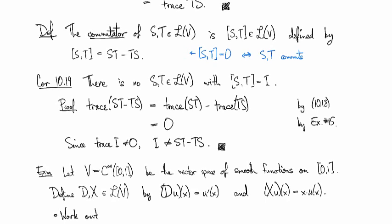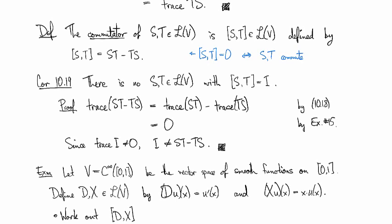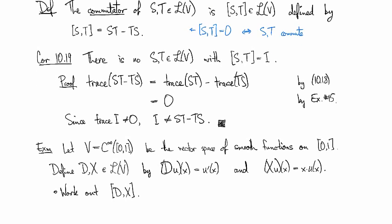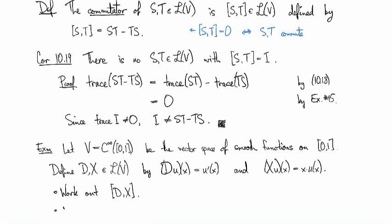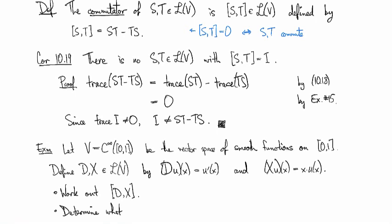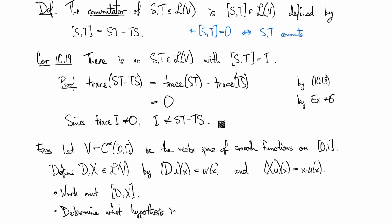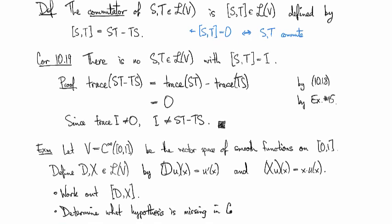So I want you to do the following. First, work out the commutator of D and X. Then, based on that, you should be able to determine what hypothesis is missing in corollary 10.19.